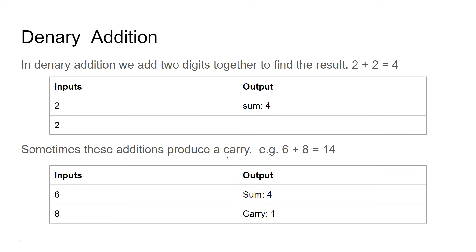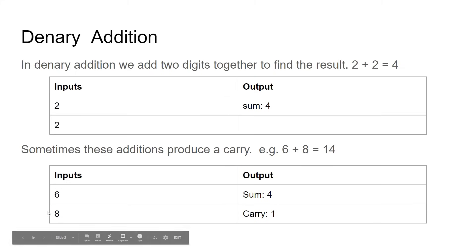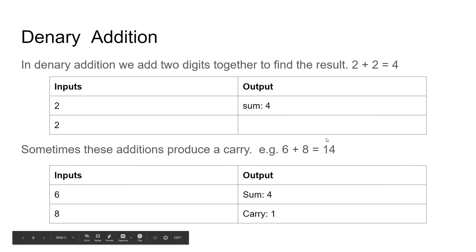Sometimes when we get additions with bigger numbers we get a carry over. So 6 plus 8 — you can't fit 14 in one column because the highest digit is 9. So what we do is we put the 4 in the first column and then we carry over the 1 onto the next column. In denary, 6 and 8: the sum is 4 on the right hand side, and we carry over a 1 to the next column.